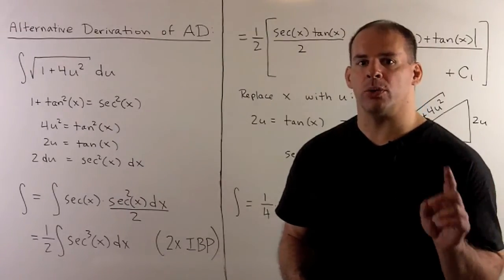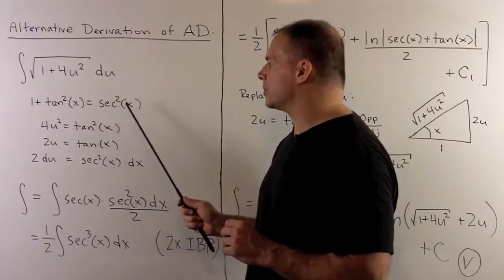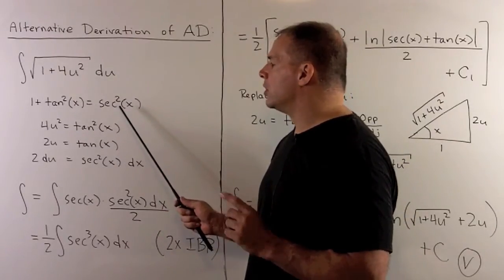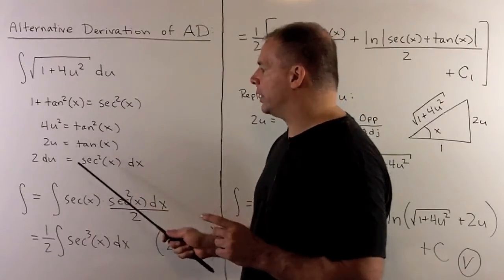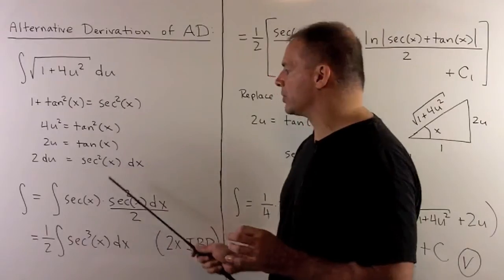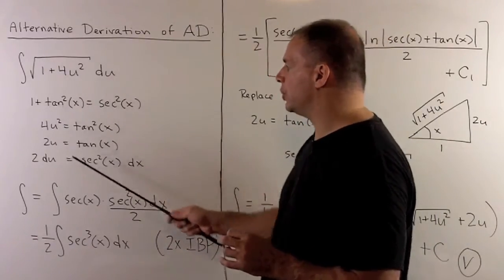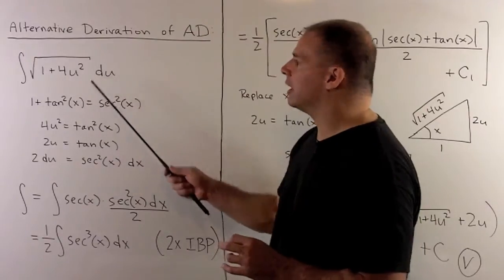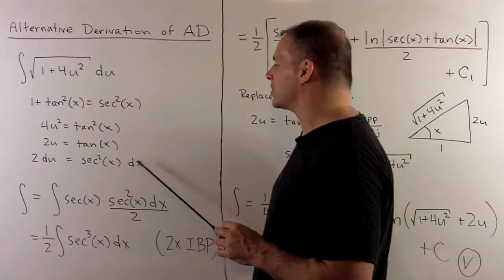Instead of using cosh squared equals 1 plus sinh squared, we're going to use 1 plus tan squared equals secant squared. So, I want to let 4u squared be equal to tan squared. We'll have 2u equals tanx. Then, taking the derivative of both sides, we get 2du equals secant squared x dx. By substitution, this term here collapses to a secant x, and then du is just secant squared x dx over 2.